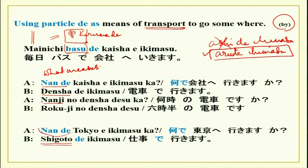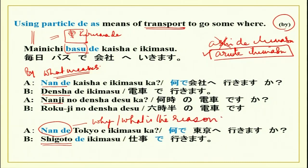When you use nande, it has two meanings. One is by what means, and the second is why — what is the reason? From context, nande is made very clear. Students from the Hindi belt will know how we use kal in Hindi — kal means both tomorrow and yesterday. Similarly, from context we can understand which meaning of nande is intended.